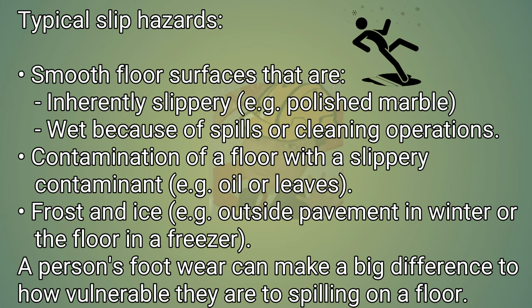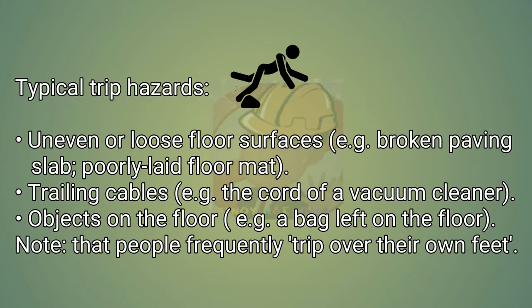A person's footwear can make a big difference to how vulnerable they are to slipping on a floor. Typical trip hazards: uneven or loose floor surfaces, for example broken paving slab, poorly laid floor mat. Trailing cables, for example the cord of a vacuum cleaner. Objects on the floor, for example a bag left on the floor. Note that people frequently trip over their own feet.